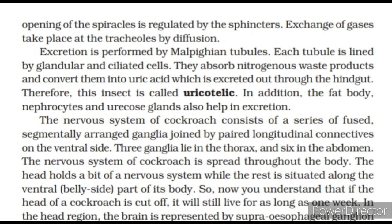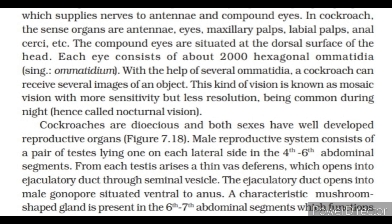In the head region, the brain is represented by the supraoesophageal ganglion, which supplies nerves to the antennae and compound eyes. The sense organs in cockroach are antennae, eyes, maxillary palps, labial palps and anal cerci. The compound eyes are situated on the dorsal surface of the head; each eye consists of about 2000 hexagonal ommatidia. With the help of several ommatidia, a cockroach can receive several images of an object. This kind of vision is known as mosaic vision with more sensitivity but less resolution, being common during night and hence called nocturnal vision.